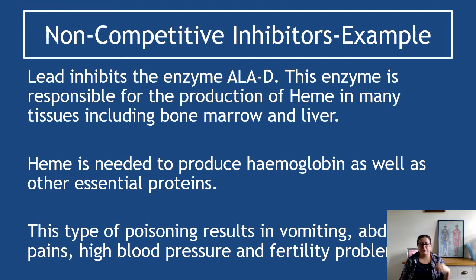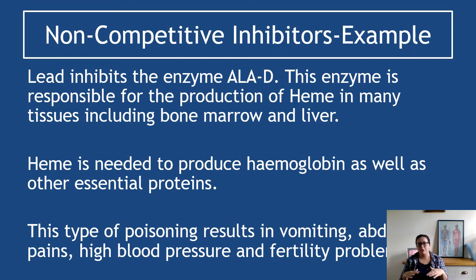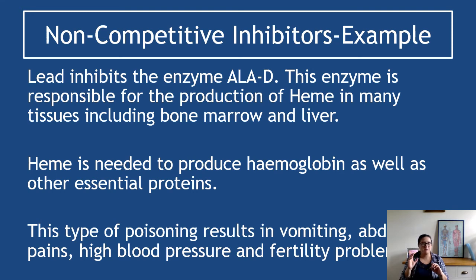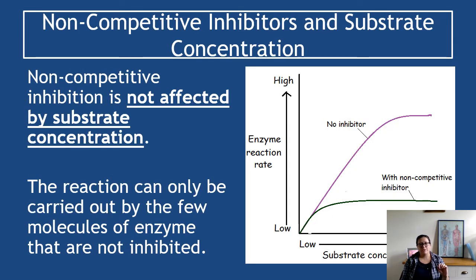An example is lead, which inhibits the enzyme ALAD. This enzyme is responsible for the production of heme in many tissues including bone marrow and liver. Heme is needed to produce haemoglobin and other essential proteins. Lead inside your body is harmful because it disables this enzyme — you won't get heme produced, and this poisoning can result in vomiting, abdominal pain, high blood pressure, fertility problems, and other issues, all because lead has changed the shape of the active site.